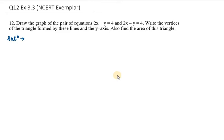First we need to find the coordinates of these equations. We have 2x plus y equals 4. Now we need to draw a table out of this and I will take x as 0 at first and y as 0 at second.